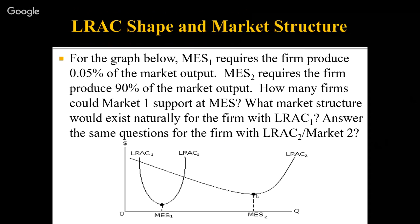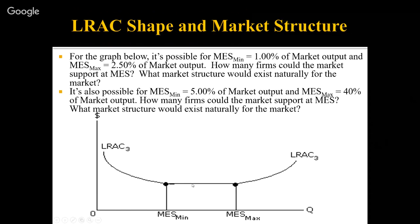With a flat-bottom LRATC, you get constant returns to scale — economies of scale, then MES with a smallest and largest size range. Suppose the smallest size to achieve MES is 1% of market output and the largest is 2.5%. One hundred divided by one is 100 firms maximum; 100 divided by 2.5 is 40 firms minimum. We'd probably have around 50 firms — some at the largest size, some in between. That's 50 to 100 small to medium-size firms. If you said monopolistic competition, you are correct.